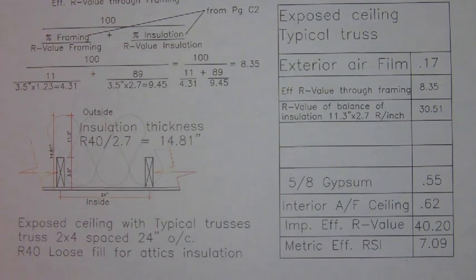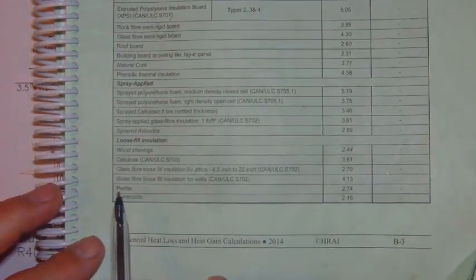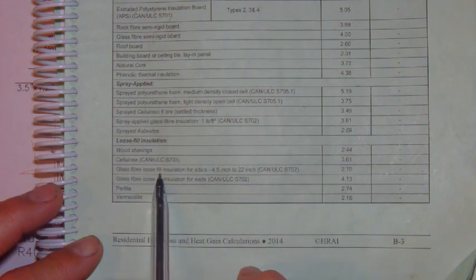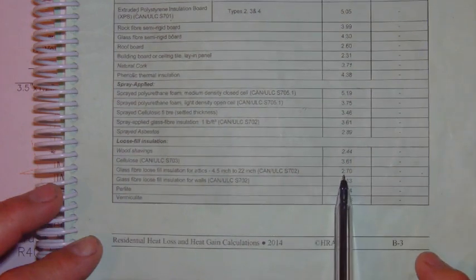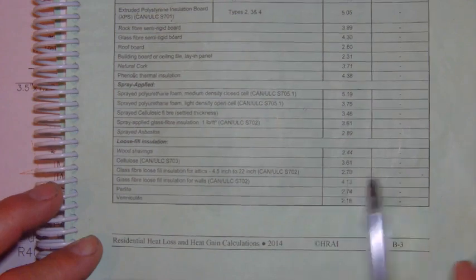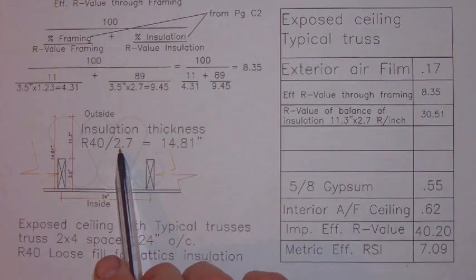If you refer to page B3 in your HRAI manual, down at the bottom, near the bottom, you're going to see glass fiber loose fill insulation for attics listed at an R-value of 2.7 per inch. So here we've got 2.7.